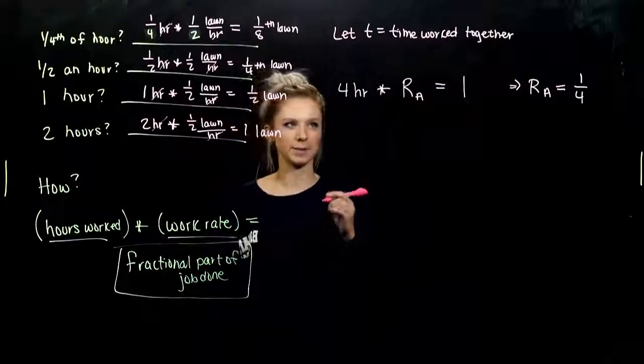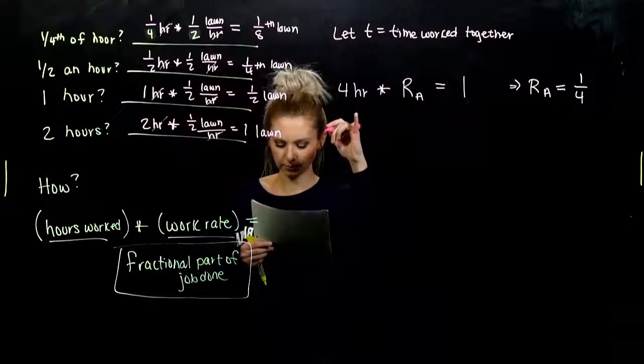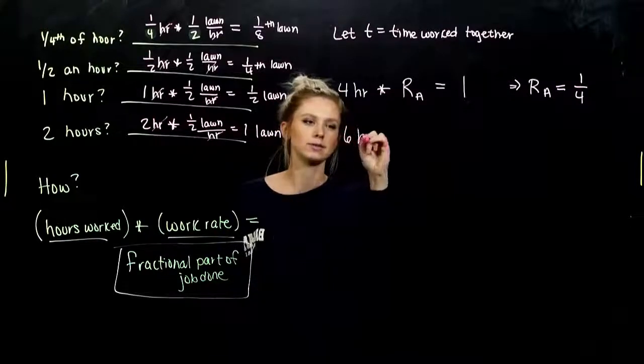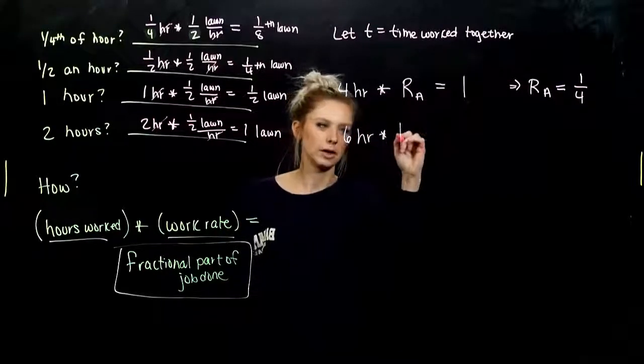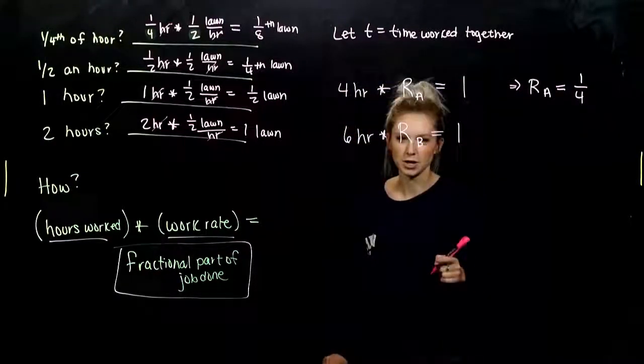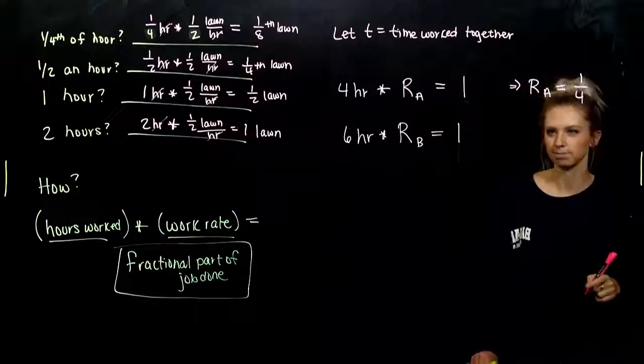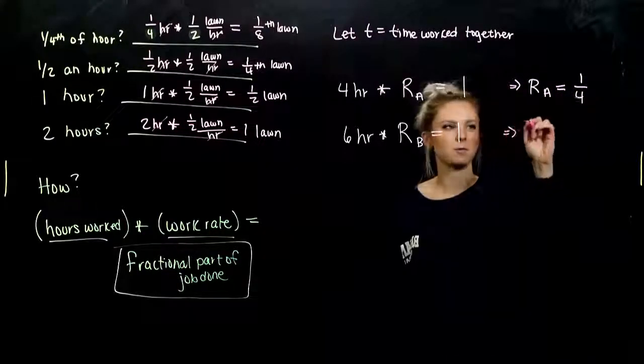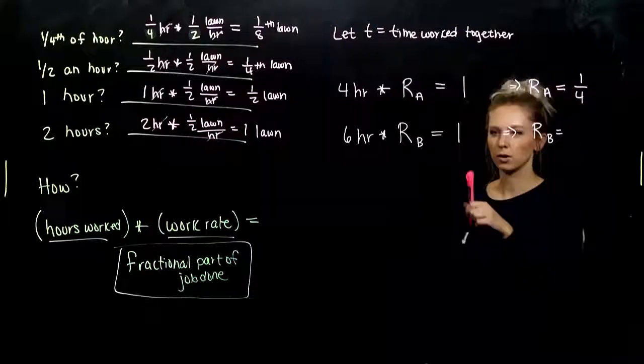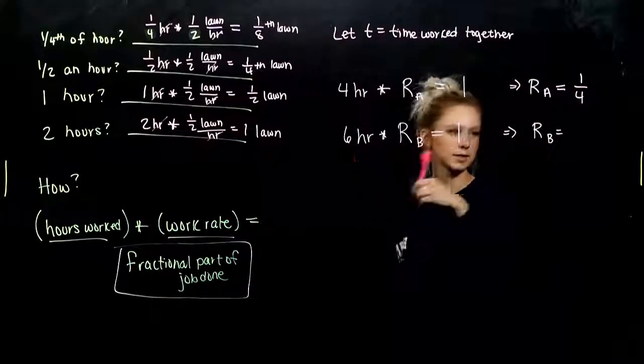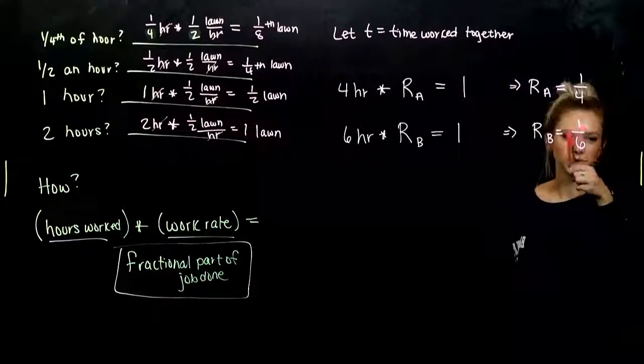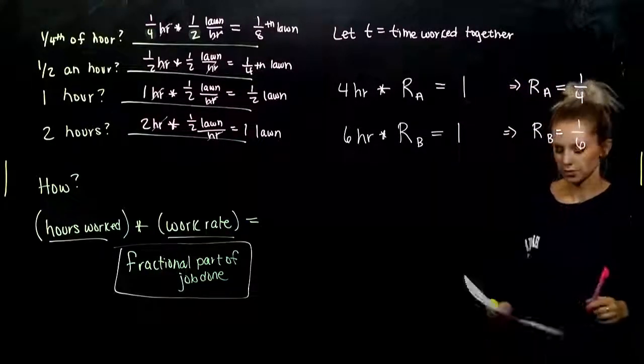And for crew B, how long are they working for? They take six hours to do the same job. Again, we don't know any info about their rate, but I know that they're completing that same job. They're finishing it entirely. So what does that mean for the rate of crew B? One divided by six in this case. So they're doing less. They take longer to complete the job than the first crew.